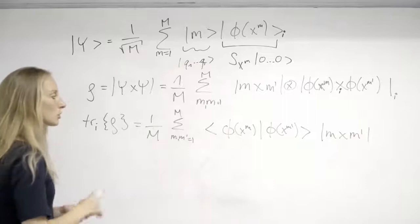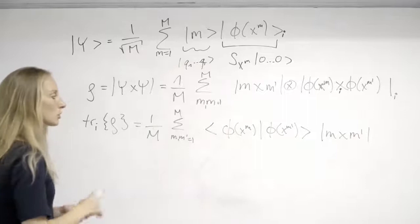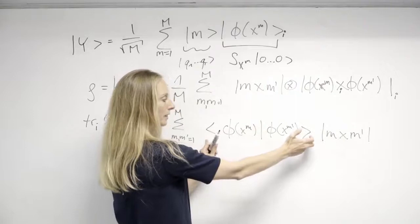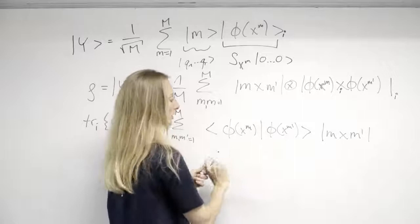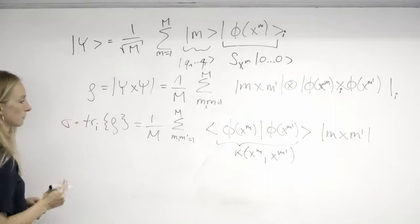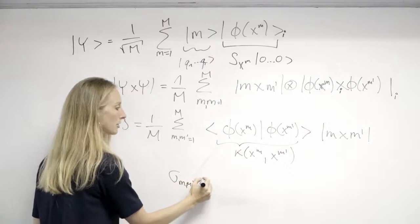So we get a density matrix whose entry m, m prime is weighted by exactly the value that's the inner product of the feature vectors, which is nothing else than our kernel. So basically sigma is a density matrix whose entry m, m dash is exactly our kernel.